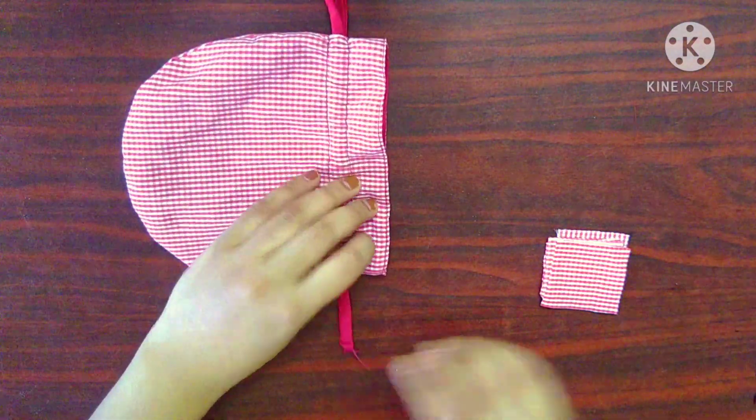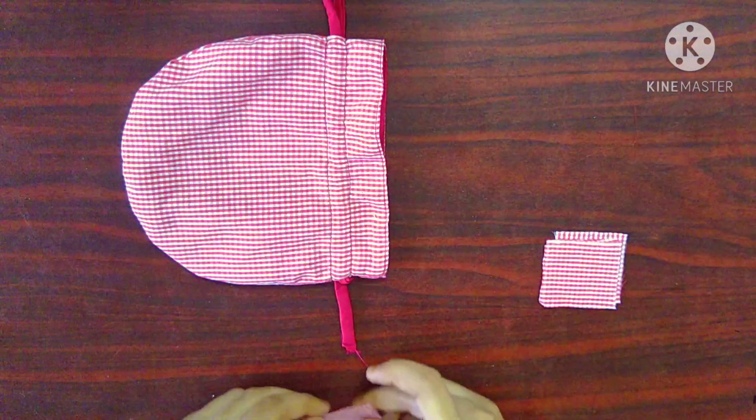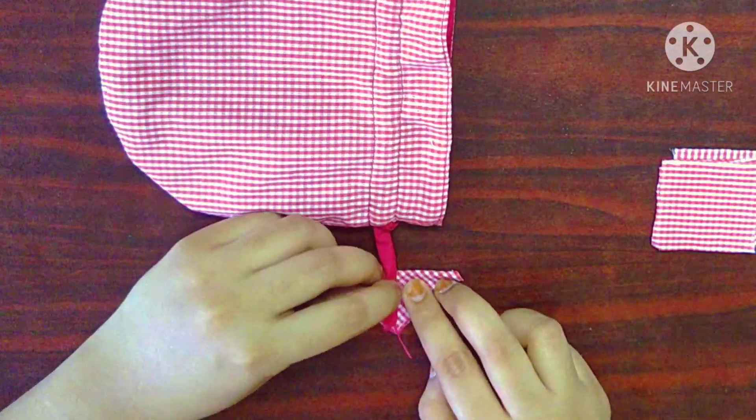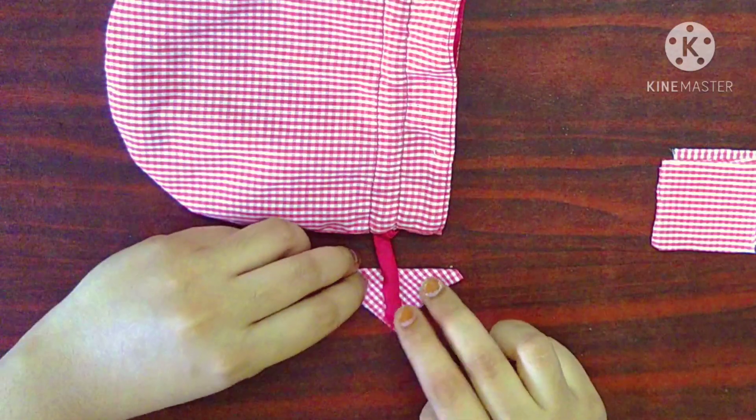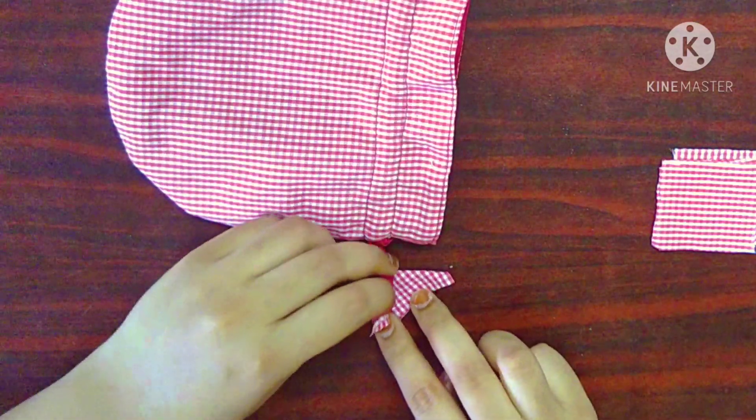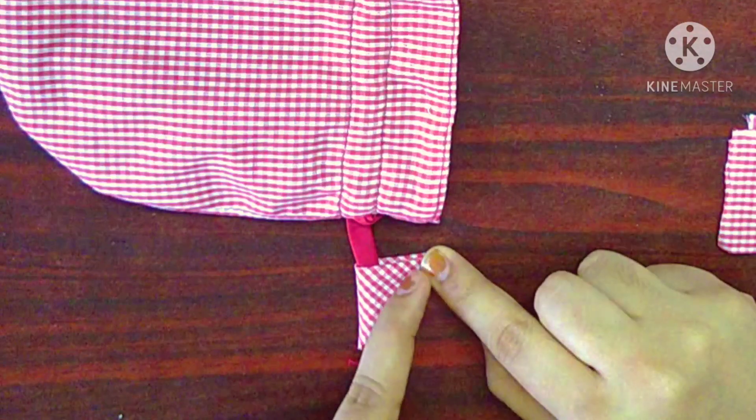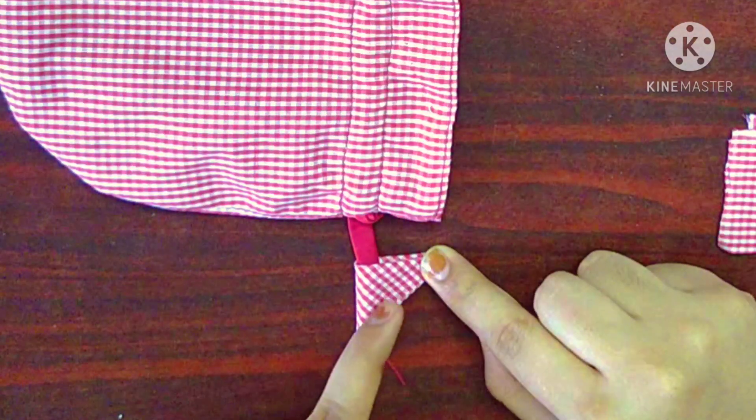Now, I am going to take the square fabric and fold it into a triangle and place the end of the string like this. And fold the triangle again such that the end of the string is sandwiched between the triangle and give a stitch along this line.